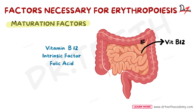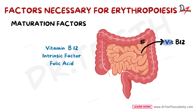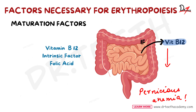The maturation factors include vitamin B12, intrinsic factor — which is produced in the gastric mucosa — and folic acid. Vitamin B12 is essential for DNA synthesis, cell division, and maturation of RBCs. It is stored mainly in the liver and in small quantities in the muscle. Its deficiency causes pernicious anemia, a macrocytic anemia, because the cells are larger in size and have a fragile and weak cell membrane. Intrinsic factor, produced by the parietal cells of the gastric gland, is essential for the absorption of vitamin B12 from the intestine.